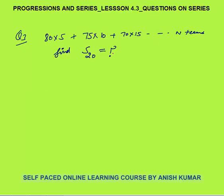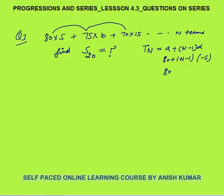Question 3: 80×5 + 75×10 + 70×15 up to n terms. Find the sum of first 20 terms. Please pause and try yourself. The first numbers 80, 75, 70 are in AP with common difference −5. The nth term for the first number is 80 + (n−1)(−5) = 85 − 5n.